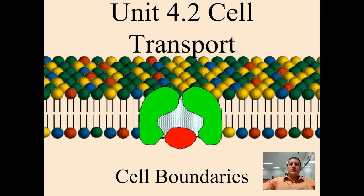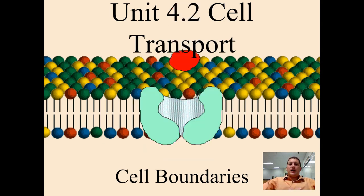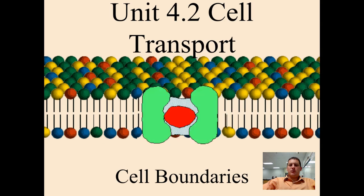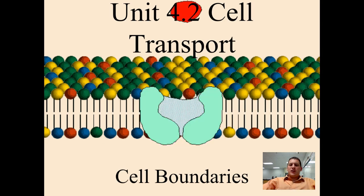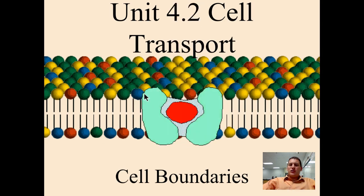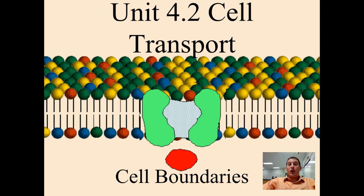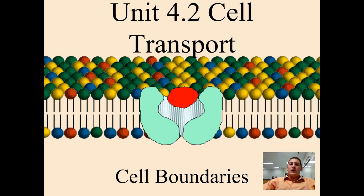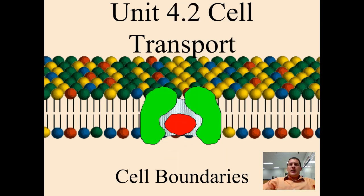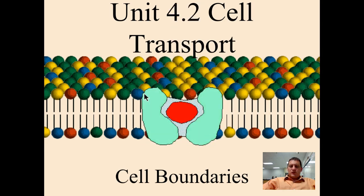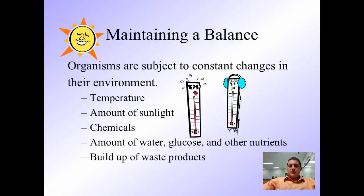Hi, this is Coach Heichel. I'm back and I'm bringing you a podcast today over Unit 4.2, Cell Transport. We're going to talk about cell boundaries, the cell membrane, and why we consider it selectively permeable. We're also going to talk about cell transport as in osmosis, diffusion, active transport, and endo- and exocytosis. So let's begin.